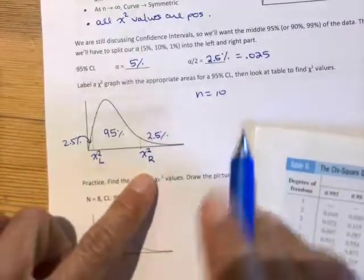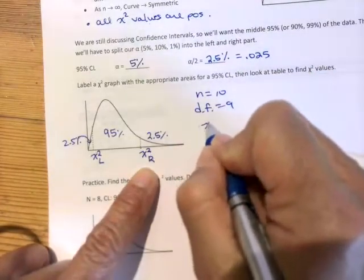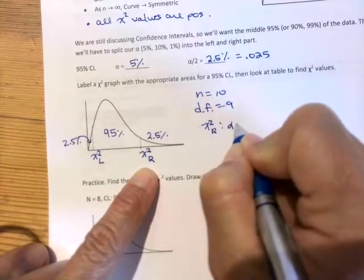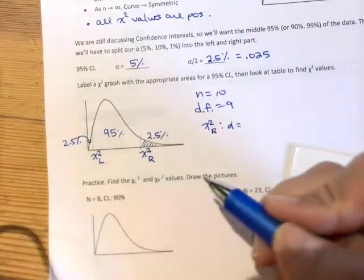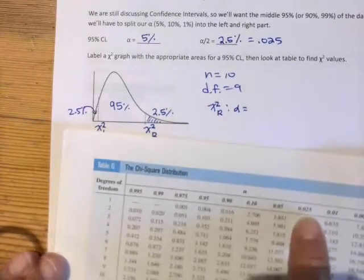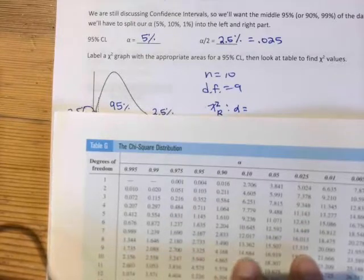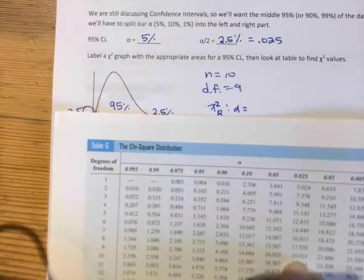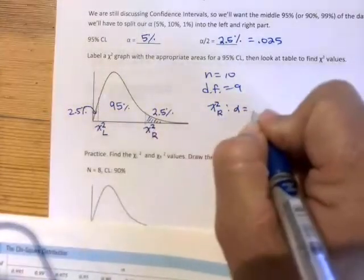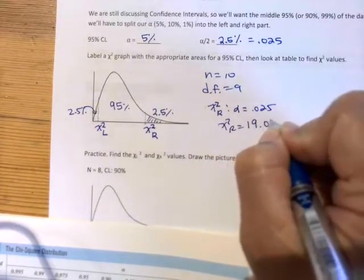For this particular example, if n is 10, that means degrees of freedom would be 9, and to find chi-square right, my alpha value, since my table is set up to look for the amount to the right, I need to find the alpha value of .025. So we're going to go across the top of the table until alpha, we find alpha is .025, and there it is. And then we're going to come down until we get to 9. So here's the 9, and we're going to find where those two meet. So 19.023. So chi-square right is 19.023.